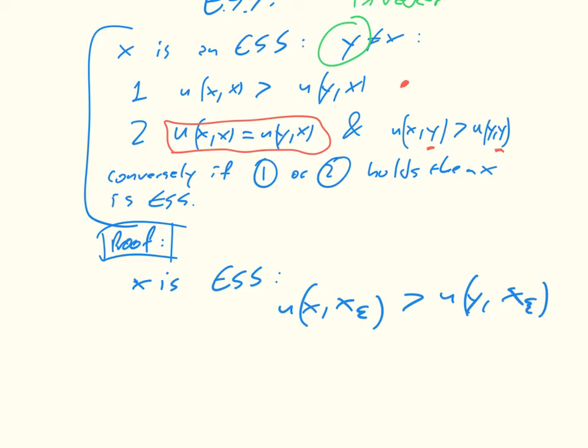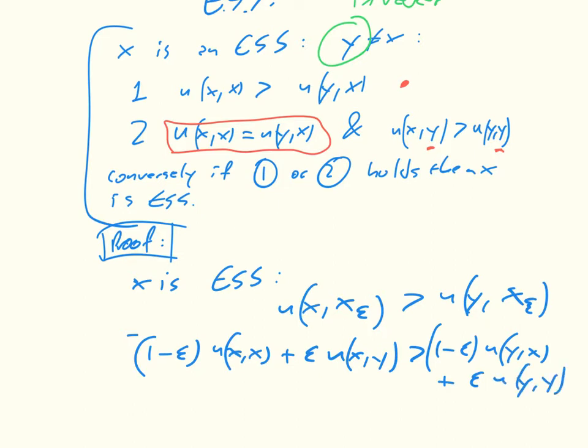That means that the utility of x in x_epsilon is greater than the utility of y in x_epsilon. And that is just equivalent to (1-ε) times utility of x in x plus ε times utility of x in y greater than (1-ε) times utility of y in x plus ε times utility of y in y. Okay, that's just the definition.